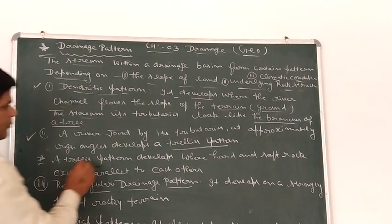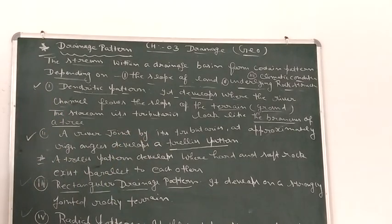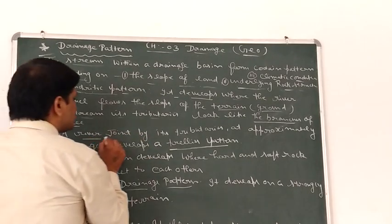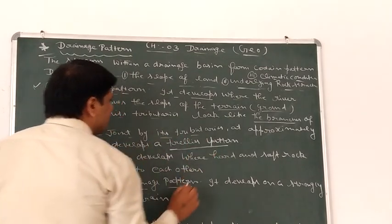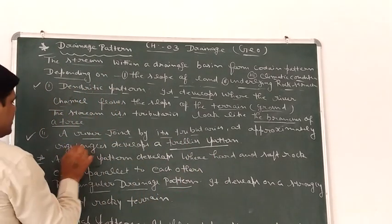The second is trellis pattern. A river joined by its tributaries at approximately right angles.